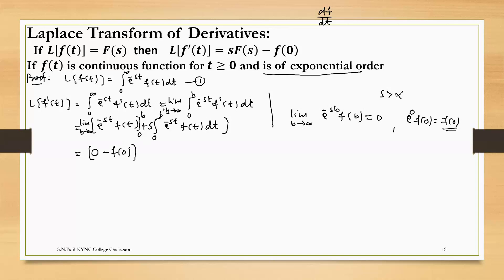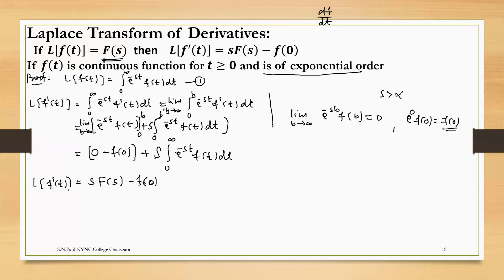Now, this is the limit as b tends to infinity of the bracket term, plus s times the integral from 0 to infinity of e^(−st) f(t) dt. From the definition, the Laplace transform of f(t) is F(s), so this can be written as s·F(s) minus f(0). So we get the Laplace transform of f'(t) is s·F(s) minus f(0), where f(t) is a continuous function.